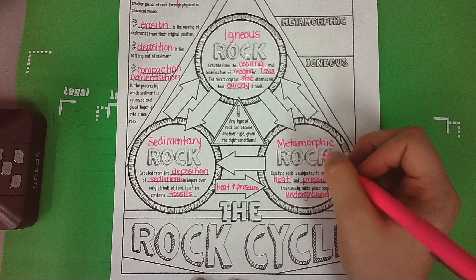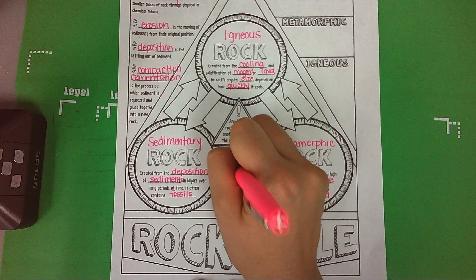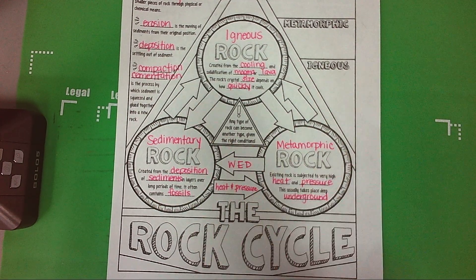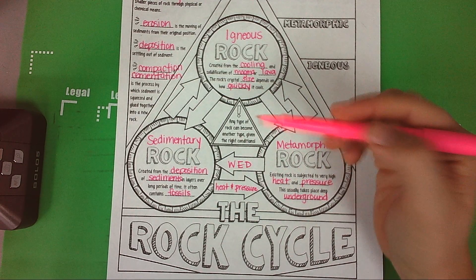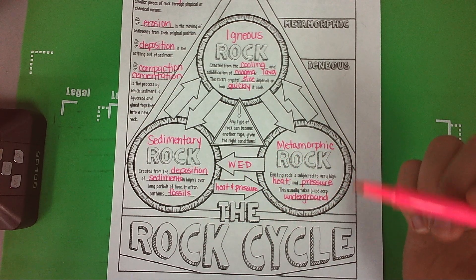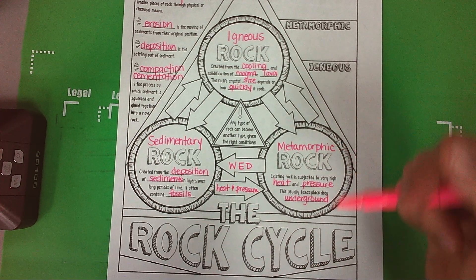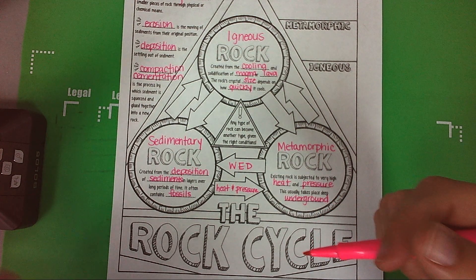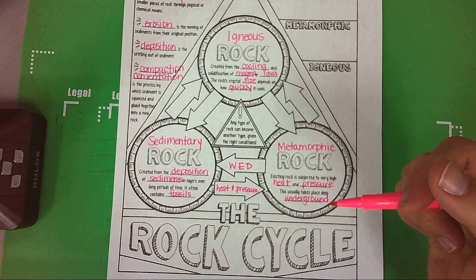Now metamorphic rock can get turned into sedimentary rock from weathering, erosion, and deposition. Remember this is a review - everything we learn is connected to each other. Weathering, erosion, and deposition actually help create sedimentary rock because weathering is going to break down those pieces of the metamorphic rock, erosion is going to move them, deposition is going to pile them together, and then that pile of sediment gets squeezed and cemented together to form sedimentary rock.